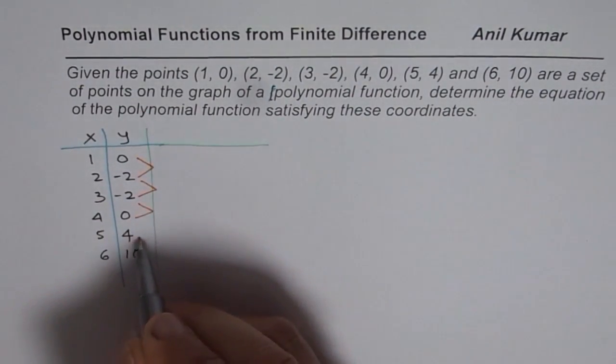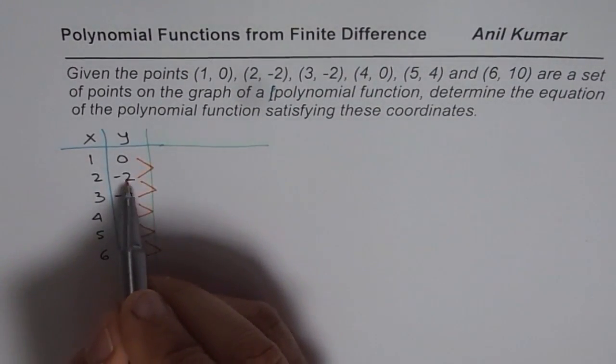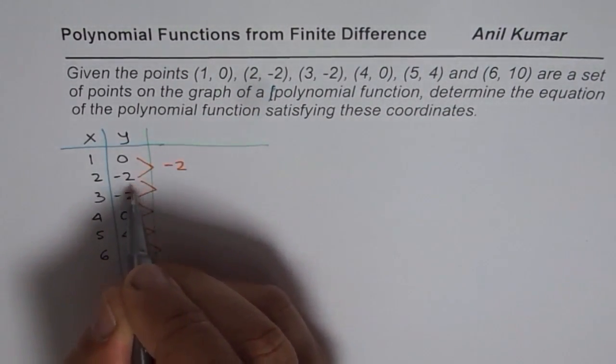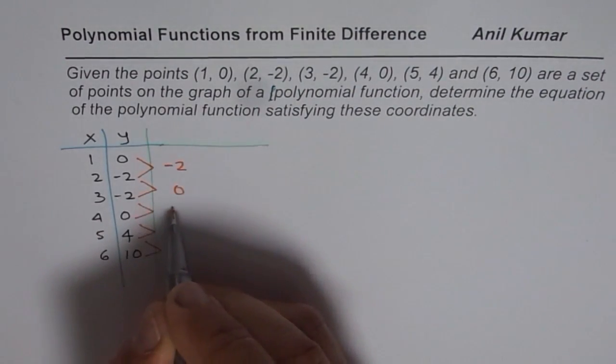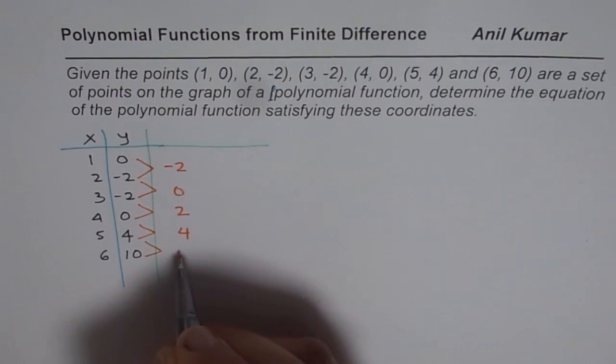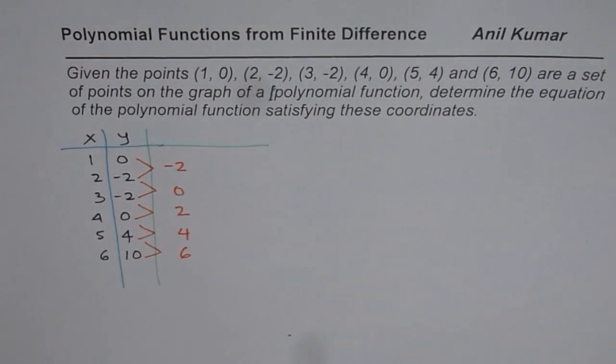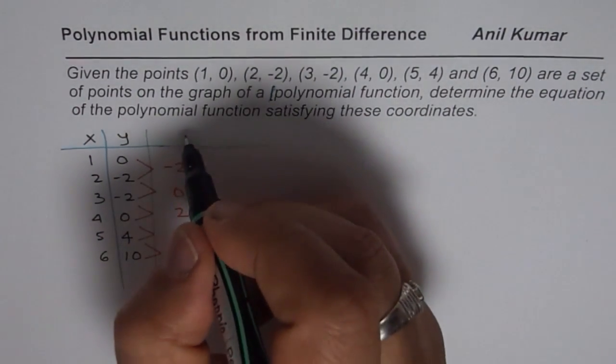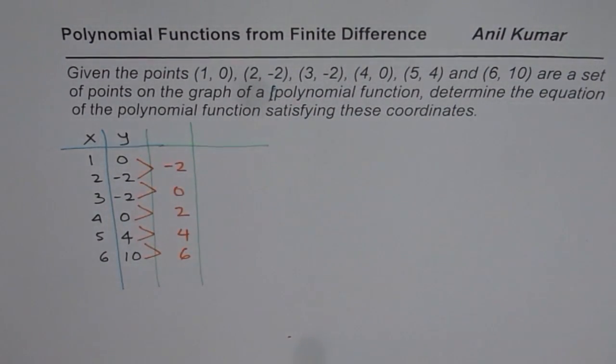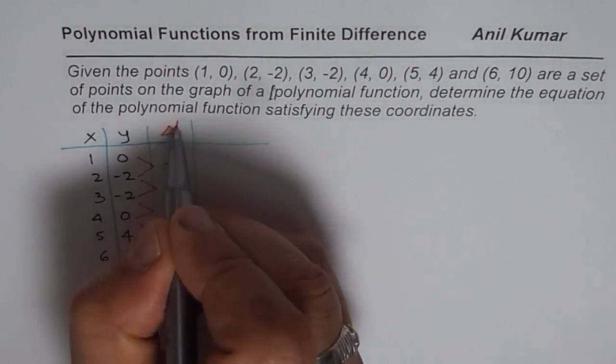Okay, let's do y2 minus y1 for all these. So we'll do y2 minus y1. So these indicate -2 minus 0 is -2. -2 minus 2 will be 0. 0 minus 2 is plus 2. 4 minus 0 is 4. 10 minus 4 is 6. Now that is not constant difference. That means it is not linear. So first difference for us is not constant.